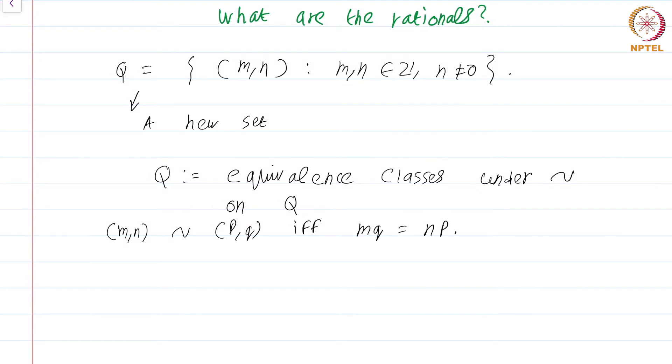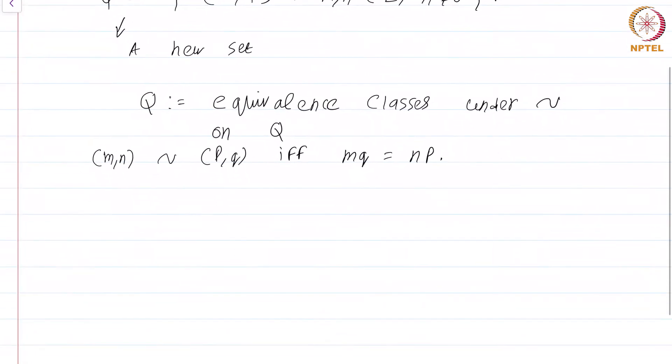I have put an equivalence relation on Q from ~. We saw this equivalence relation in the last module. Now I consider the collection of all equivalence classes and I declare a rational number to be an equivalence class.